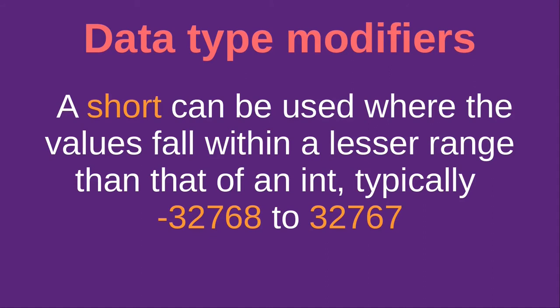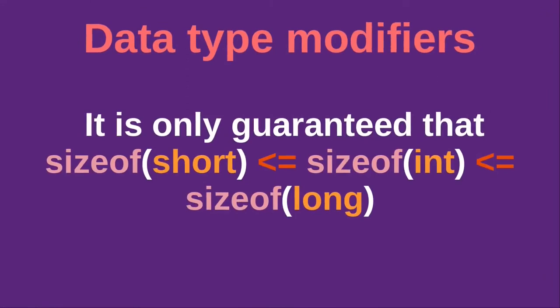A long can be used to contain an extended range of values. It is not guaranteed that a short uses less memory than an int, but it is guaranteed that a long takes more memory than an integer. It is guaranteed that the size of short is less than or equal to the size of int, which is less than or equal to the size of long. Typically a short is two bytes, an int is four bytes, and a long is either four or eight bytes. Modern C compilers also provide long long, which is typically an eight-byte integer.